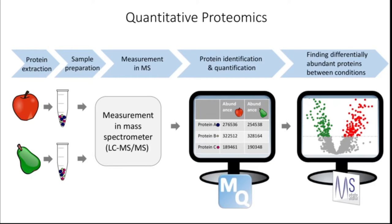Two de facto standard softwares for quantitative proteomics experiments are MaxQuant and MSstats. MaxQuant takes raw data directly from the mass spectrometer as input and performs protein identification via its Andromeda search engine. It also performs protein quantification based on all common quantification methods, for example label-free, SILAC, and TMT. Afterwards, MSstats can be applied to find differentially abundant proteins between different groups of interest by applying linear models.